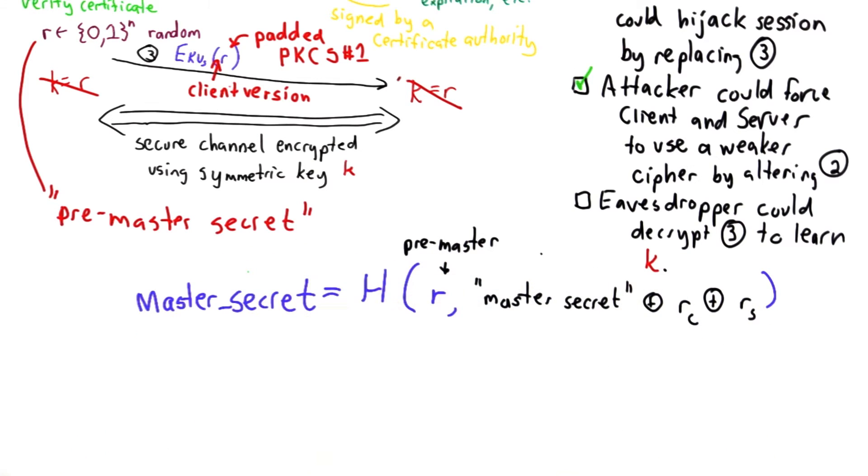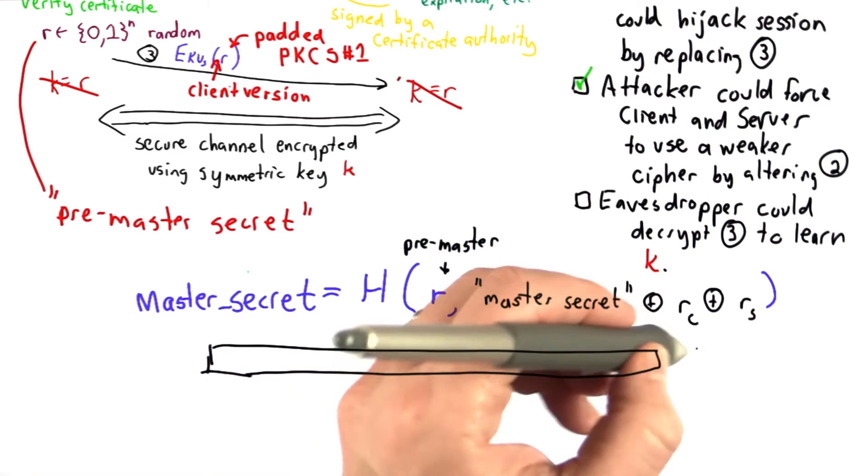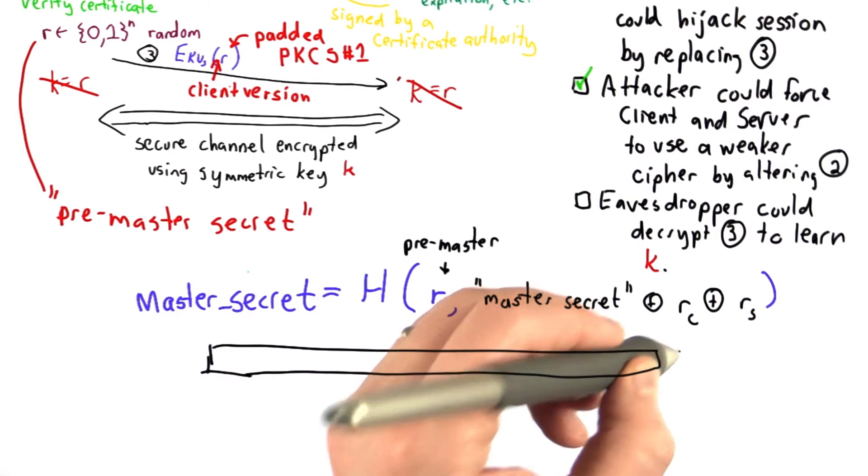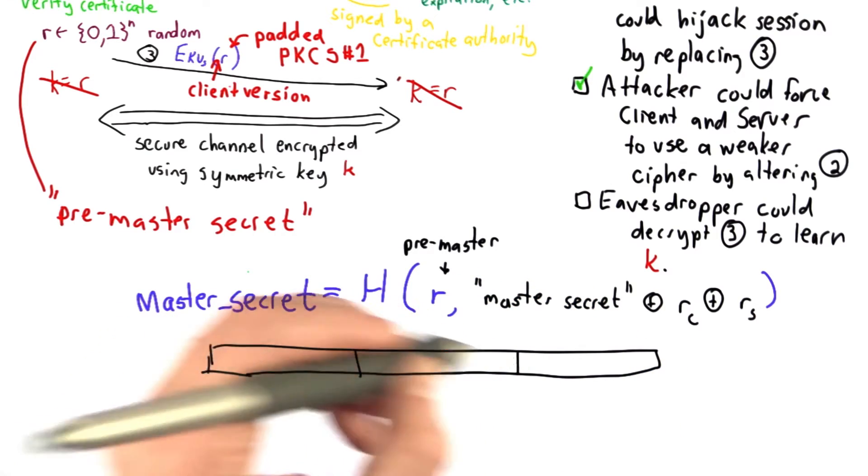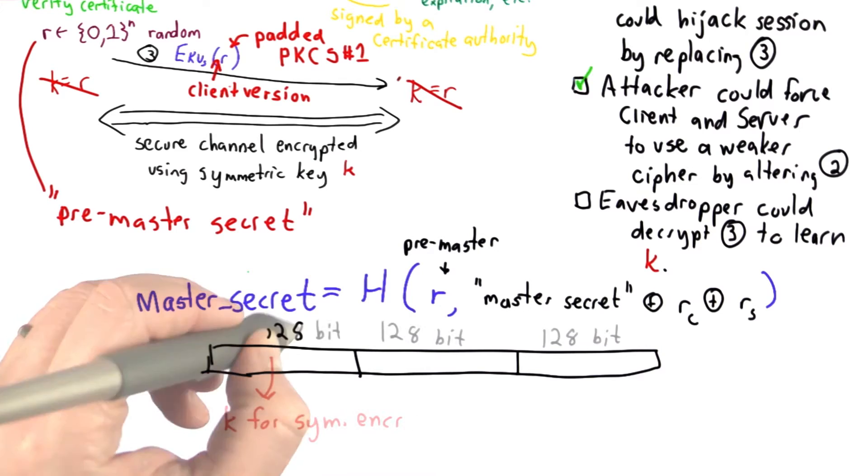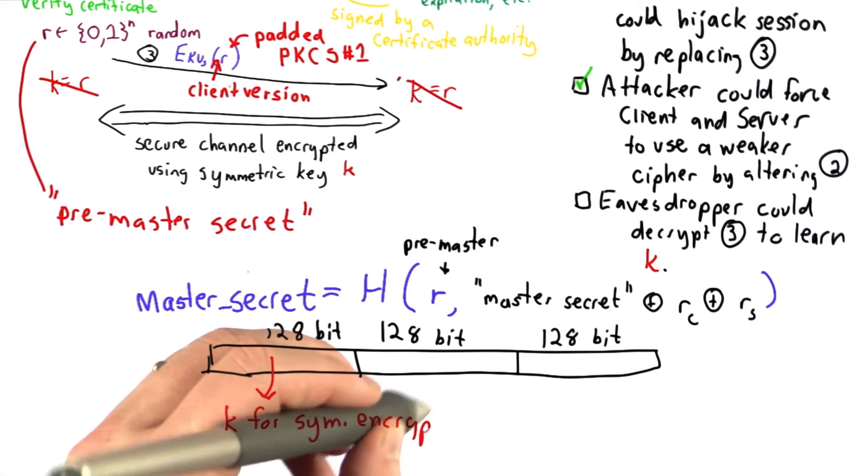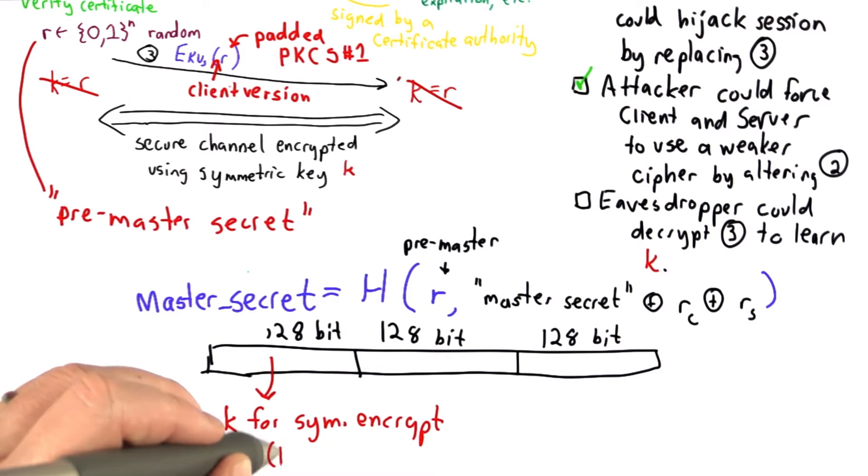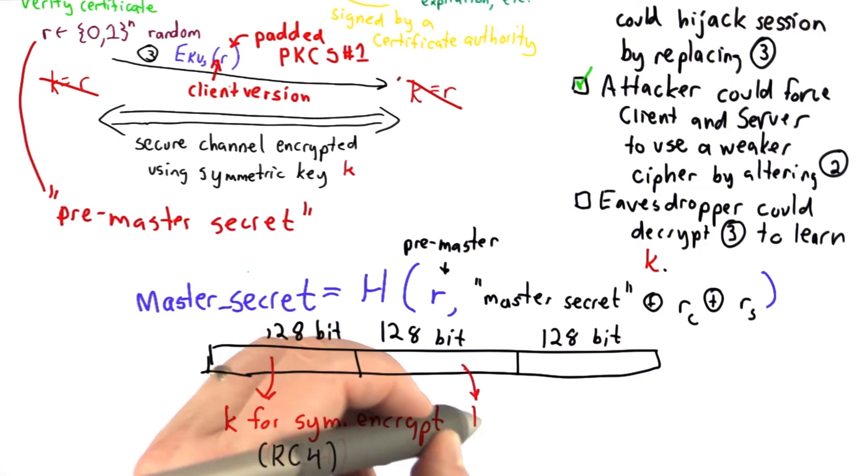What it produces is 384 bits, which gets divided into three 128-bit keys. One of these will be used as the key for symmetric encryption, and that's using an algorithm like rc4, typically.